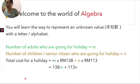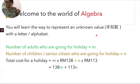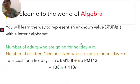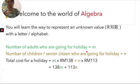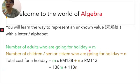First, for an unknown value — a value that we don't know now — we can always represent it with a letter. For example, the number of adults going for a holiday in your family could be five, seven, two, or one. Let this number be m.